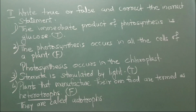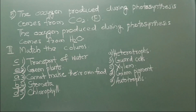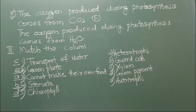Number 3: Stomata is stimulated by light. The statement is true. Number 4: Plants that manufacture their own food are termed as heterotrophs. It is false. The correct statement is they are called autotrophs. Number 5: The oxygen produced during photosynthesis comes from carbon dioxide. It is false. The oxygen produced during photosynthesis comes from water.